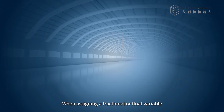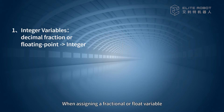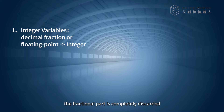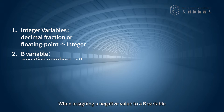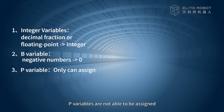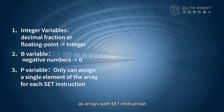Note: When assigning a fractional or float variable to an integer variable, only the integer part is used — not rounded; the fractional part is completely discarded. When assigning a negative value to a B variable, the system stores it as 0. P variables cannot be assigned as arrays with the Set instruction; they must be subdivided into single elements.